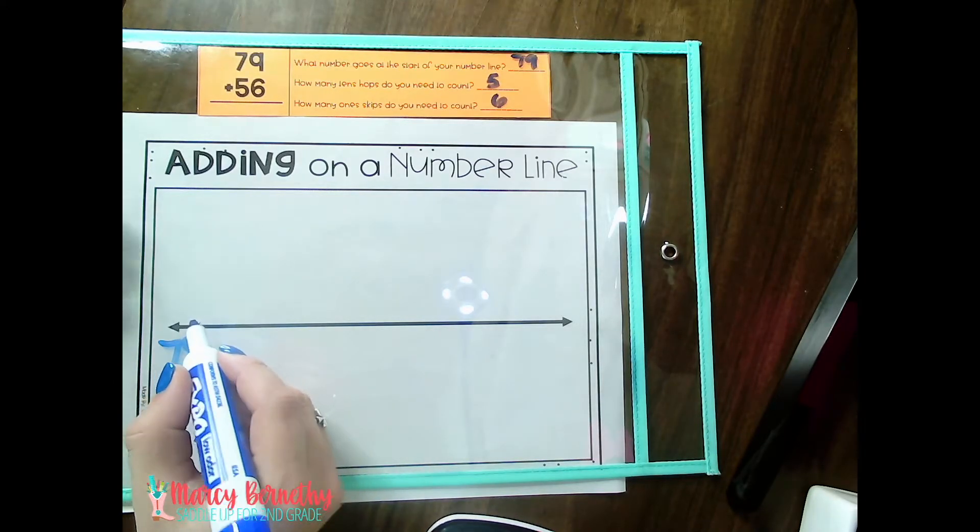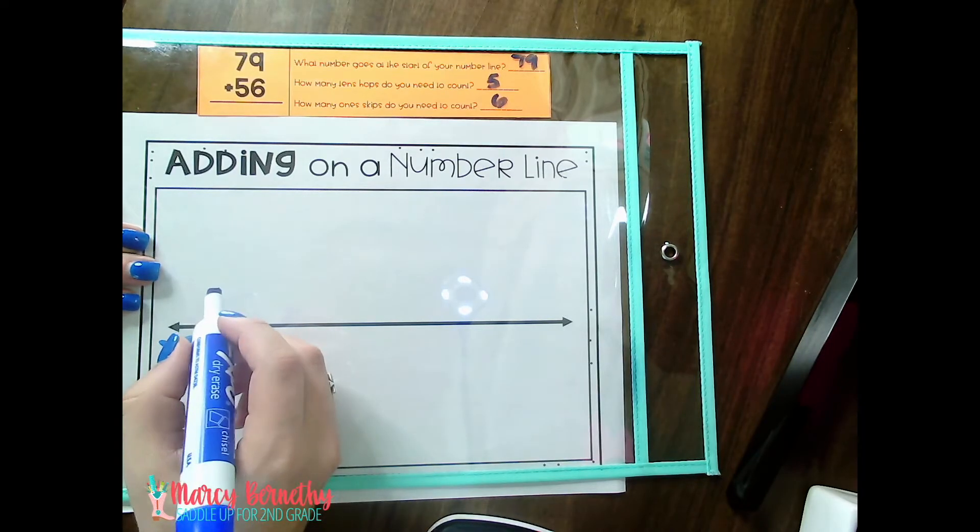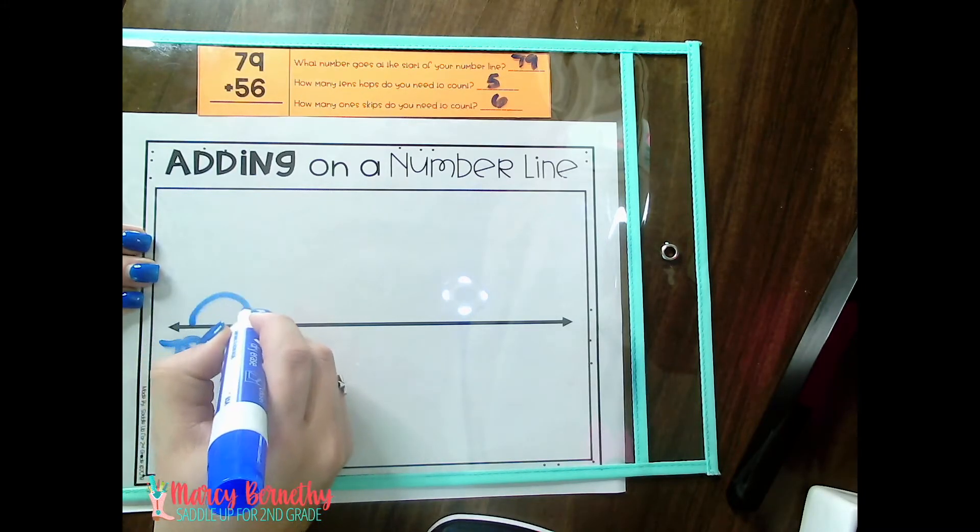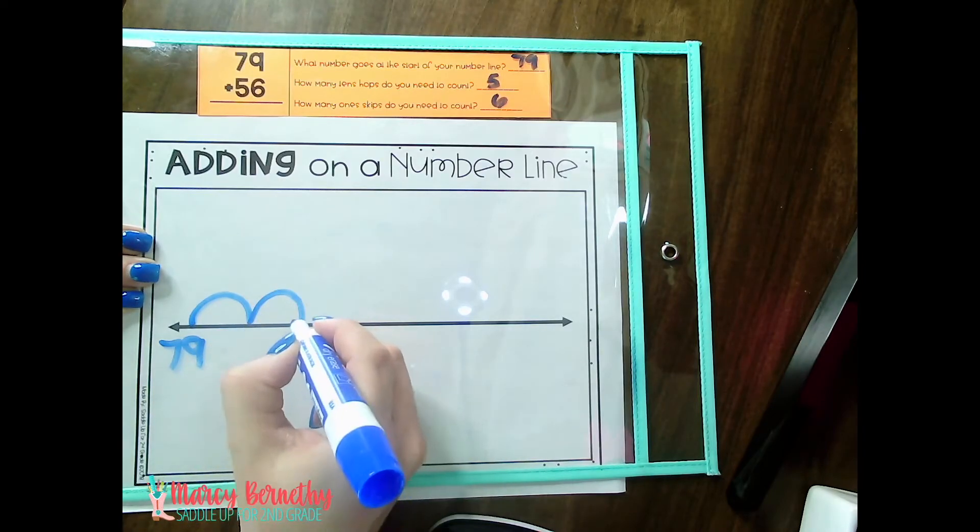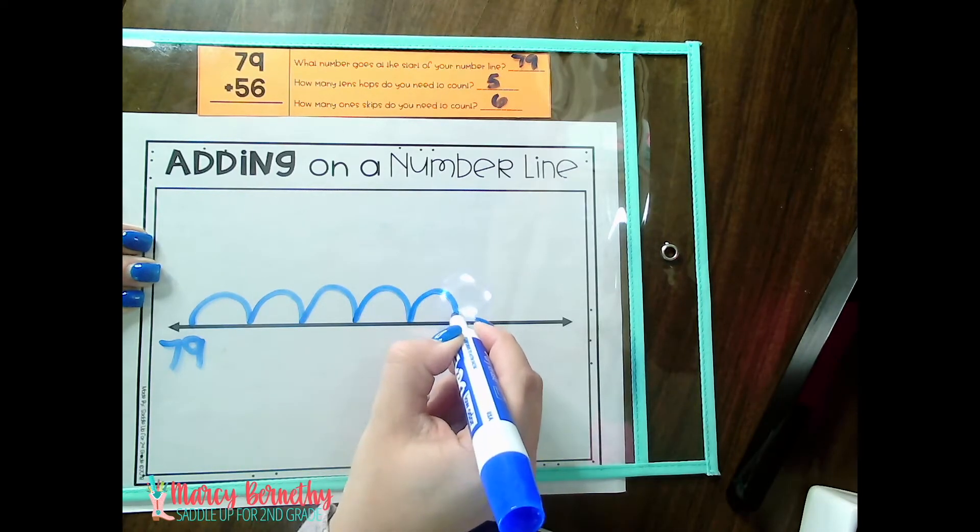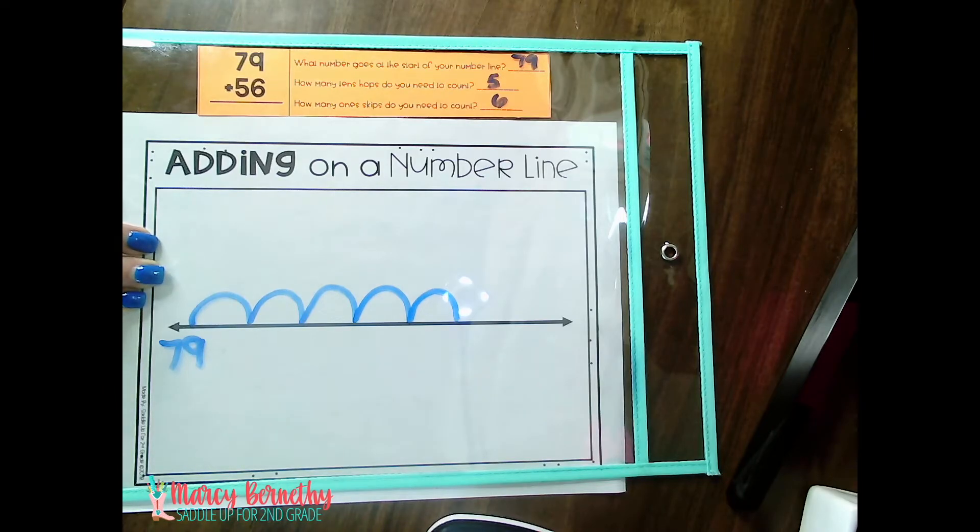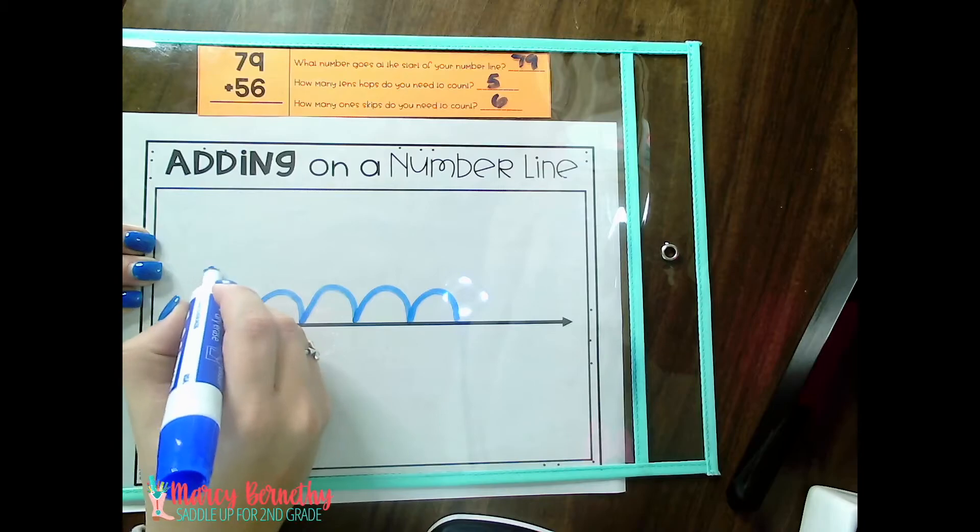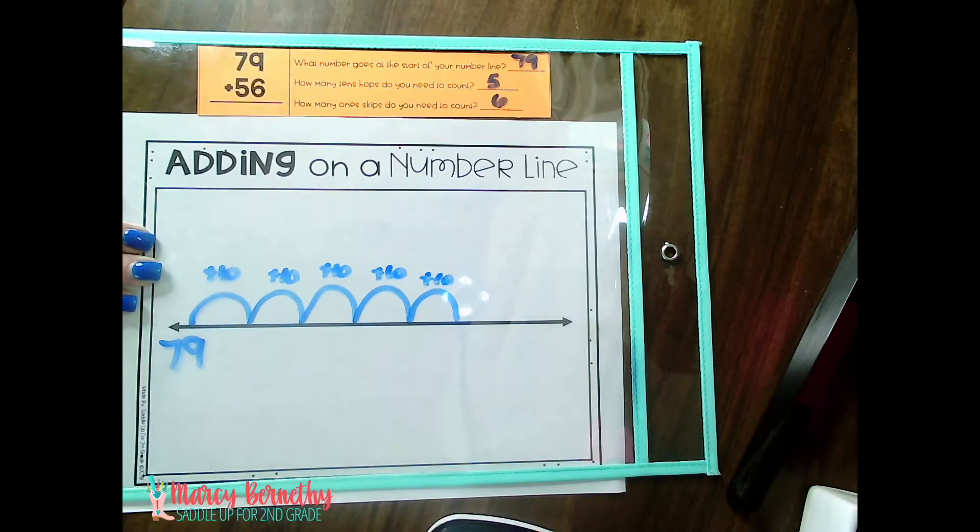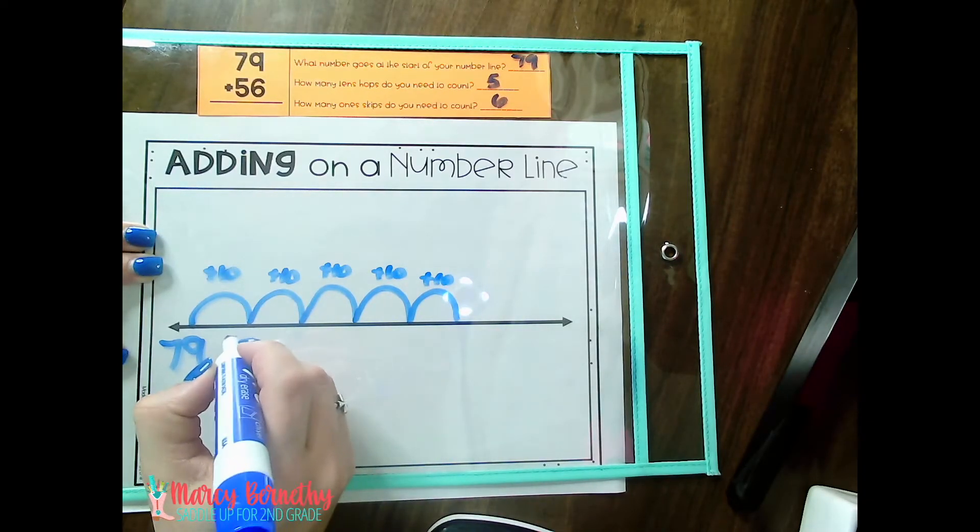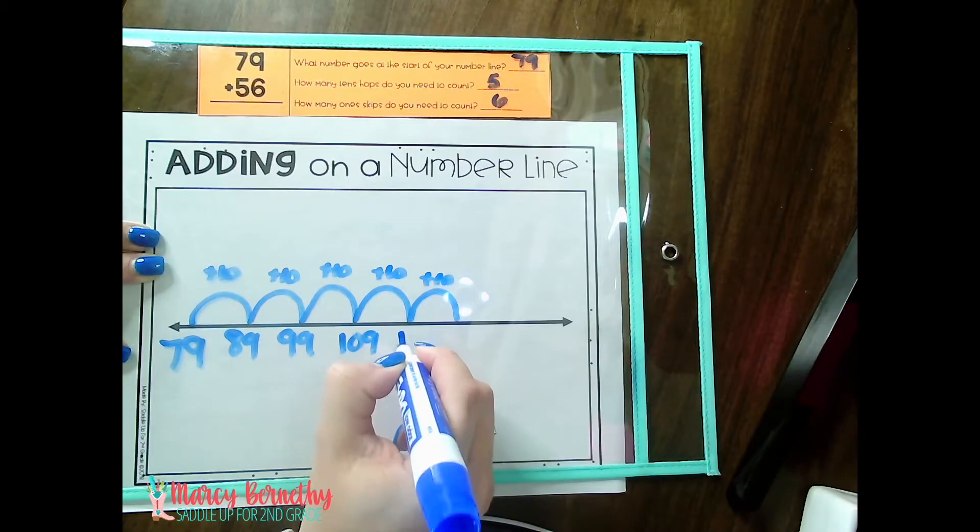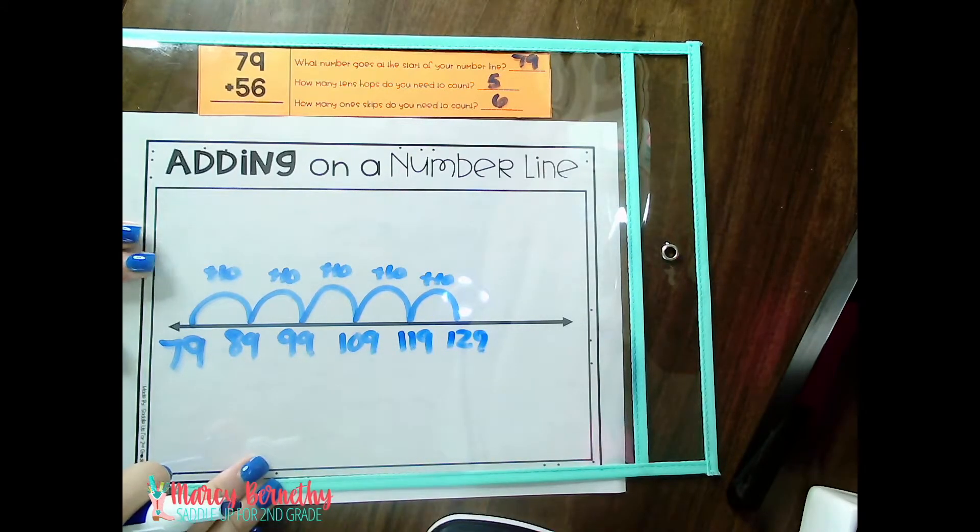So we're going to start here with 79 and they are going to draw five tens hops. If they do have a strong understanding, I would have them count out loud. So 79, 89, 99, 109, 119, 129. If they cannot mentally count in their head, there's two things that you can do. You can have them write plus 10 above each one if you wanted to. You do not have to have them do this, but I do down here at the bottom. I would have them write 89, 99, 109, 119, 129. Okay, so we did our tens hops.